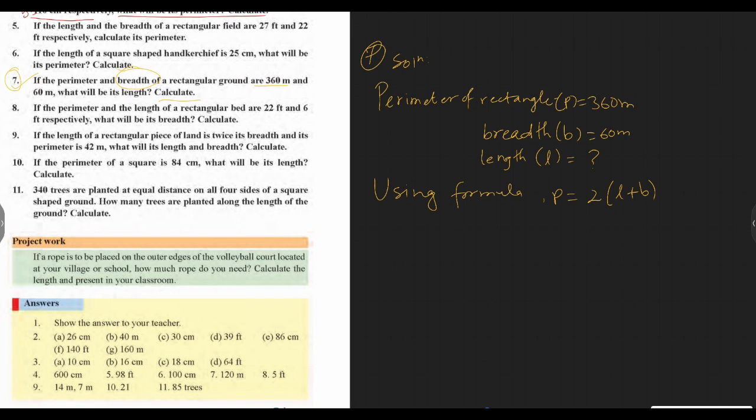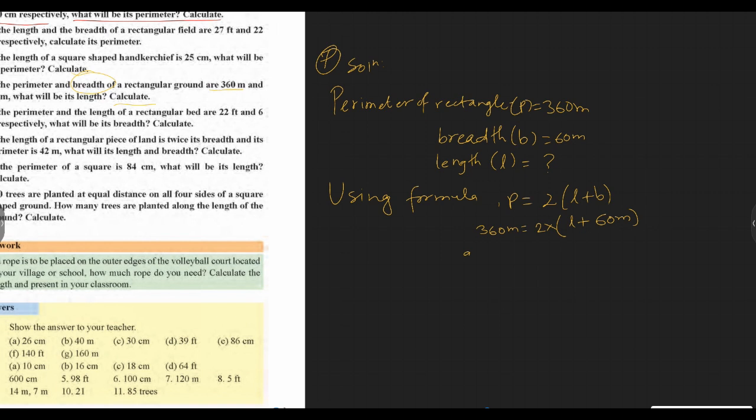360 meter equals 2 times l plus 60 meter. Now divide both sides by 2.